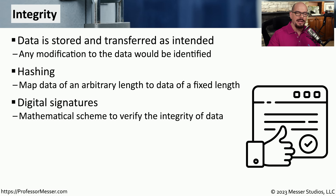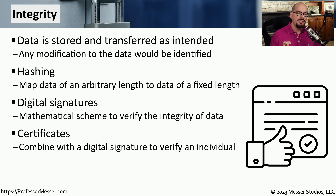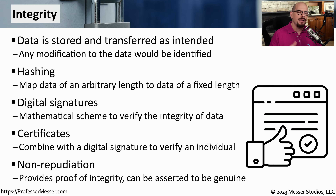We can enhance this integrity by including a digital signature when sending data, which takes a hash and encrypts it with an asymmetric encryption algorithm. This means we can check that none of the data has changed and confirm the person who sent the data. It's also common to use certificates to identify devices or people and provide additional factors of integrity, especially when transferring data from one device to another. Lastly, we have the concept of non-repudiation — proof of integrity confirming without a doubt that the information received really did come from the originating party.